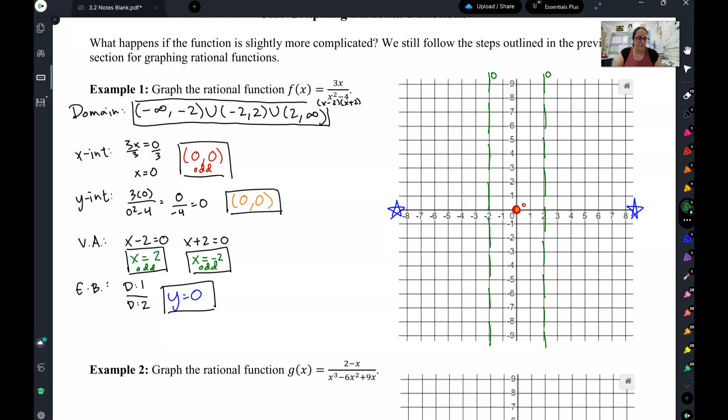Let's see how you did. We started with our domain. Remember, domain comes from the denominator. So I factored the denominator to x minus 2 and x plus 2, difference of squares.